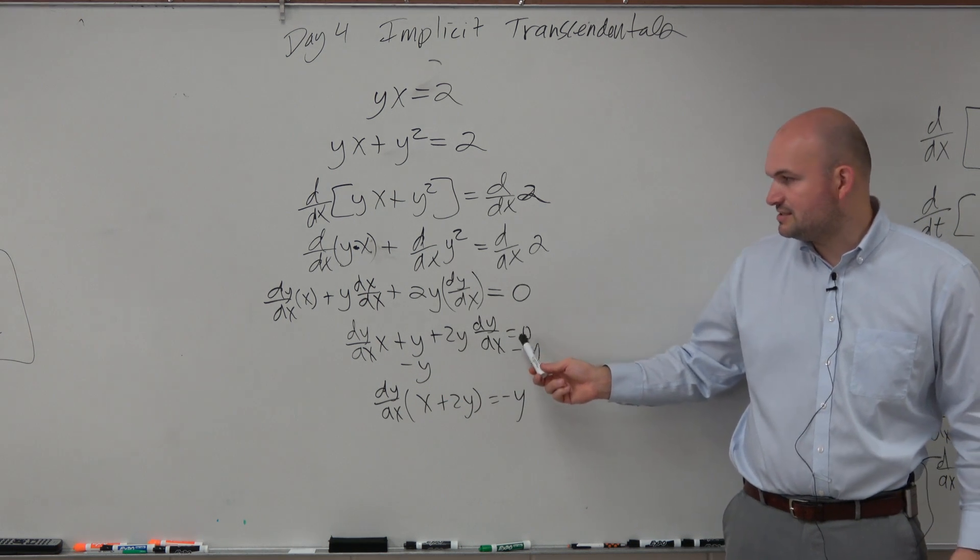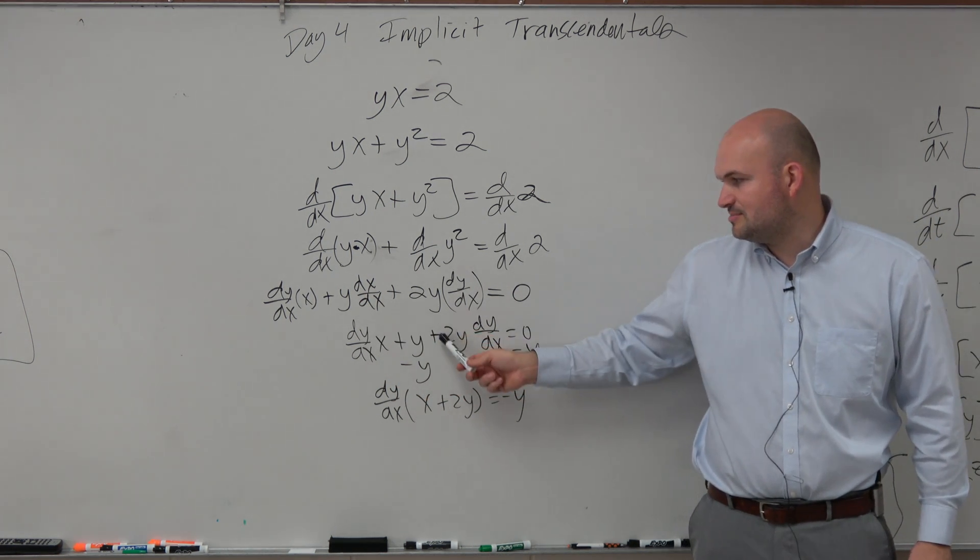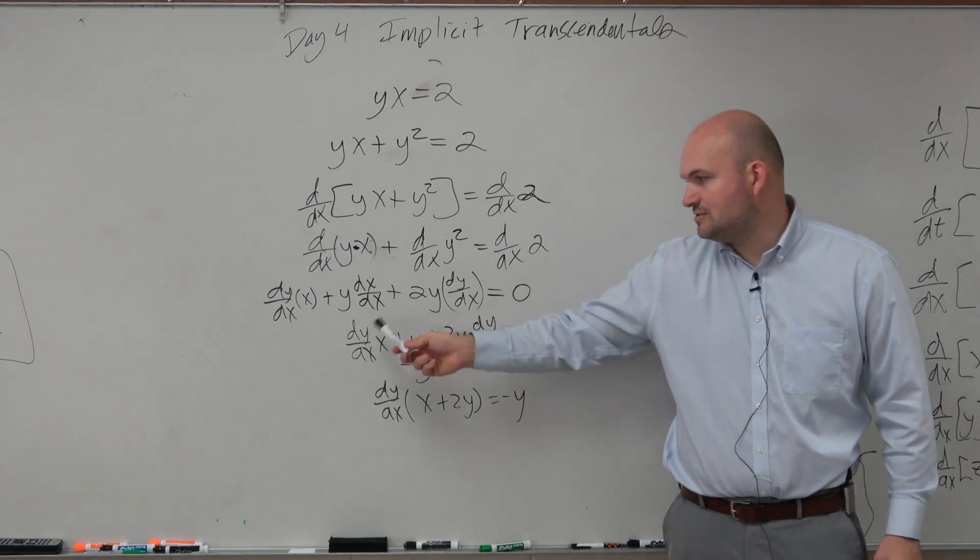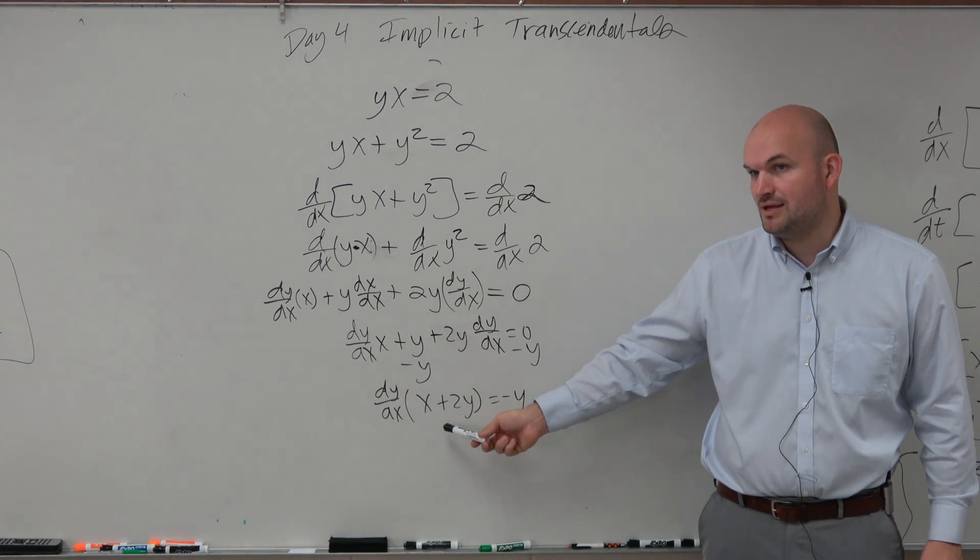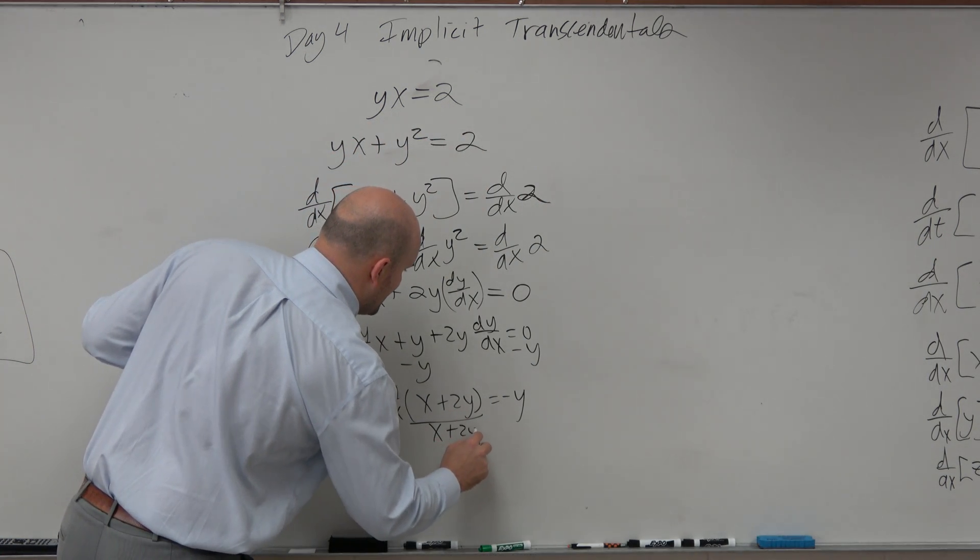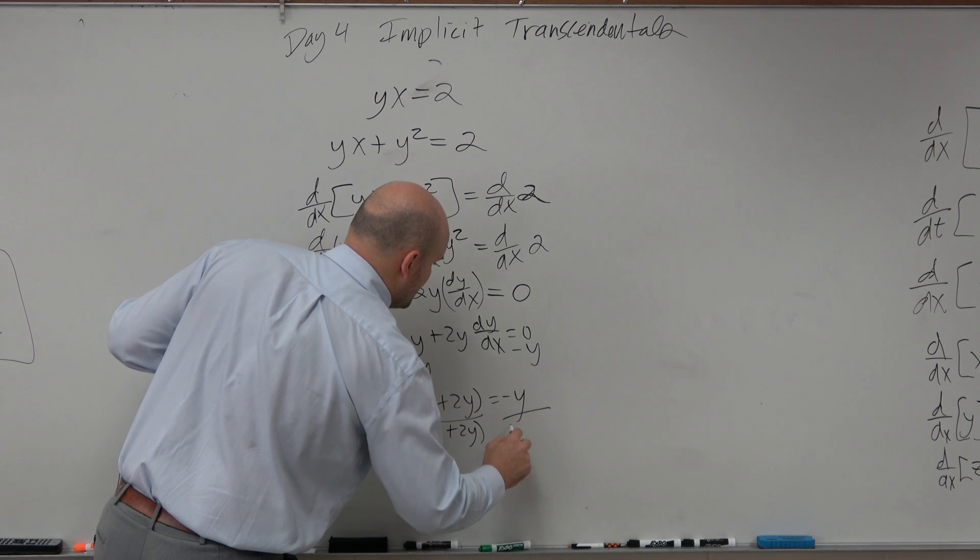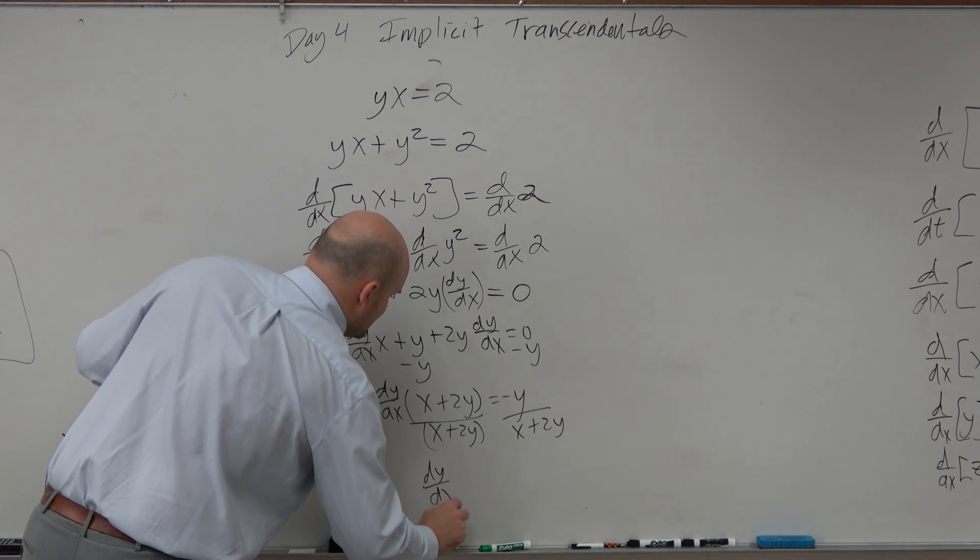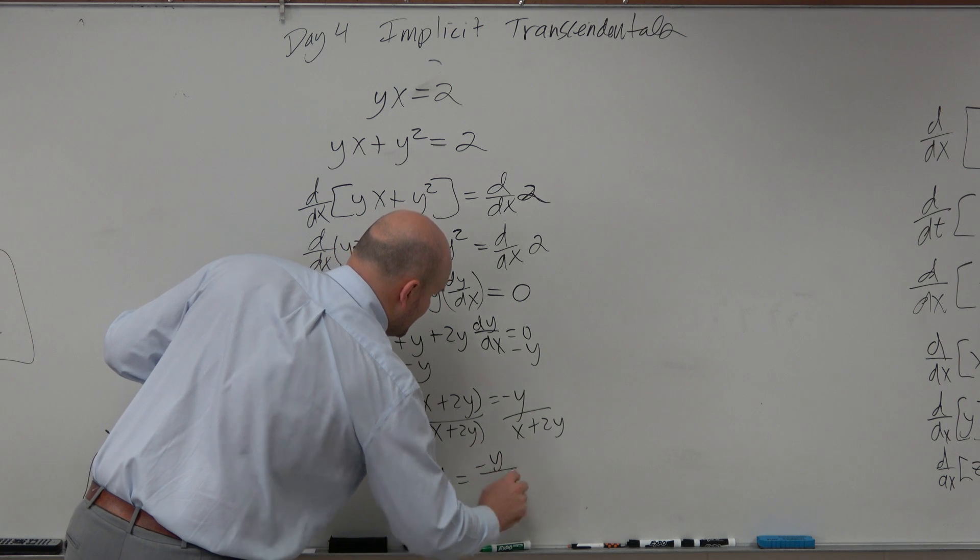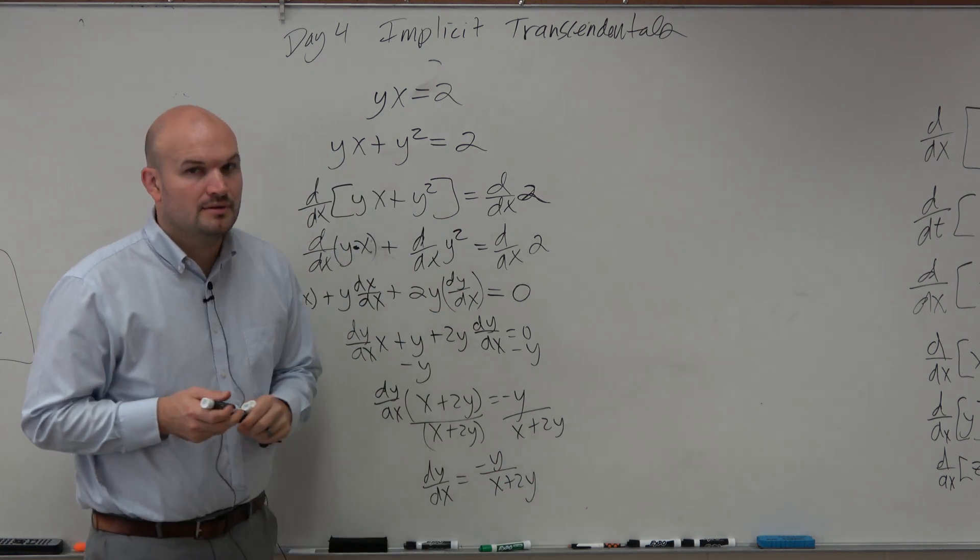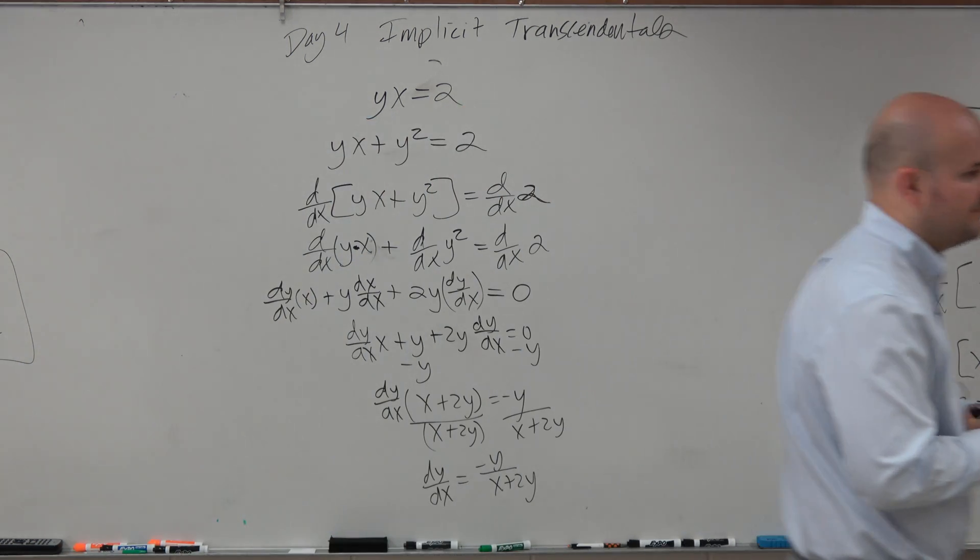I subtracted the y on both sides, left me with dy/dx times x plus 2y dy/dx. I factor them out, leave me with the x plus 2y. And now, I can just divide by x plus 2y, and I get dy/dx equals negative y over x plus 2y. And that is my derivative.